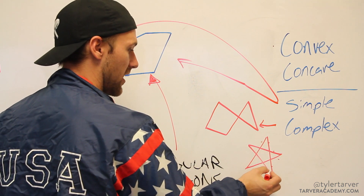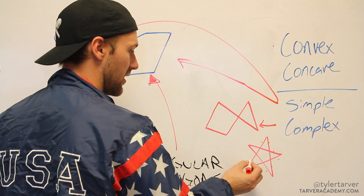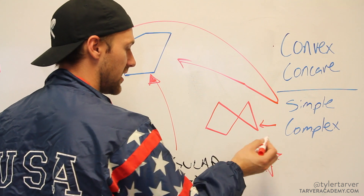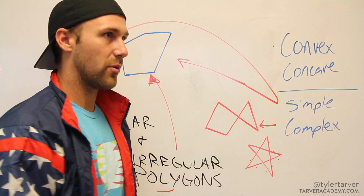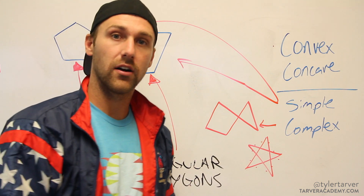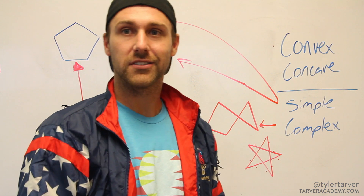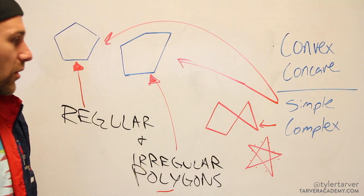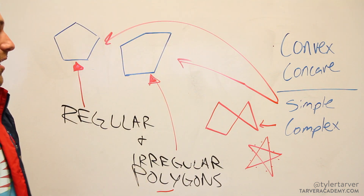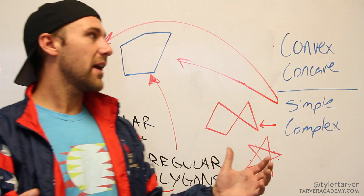One, two, three, four, five, six, seven, eight, nine, ten — that's ten sides, so therefore it's a decagon. Nailed it. So that's what we're looking at — those are the basics.